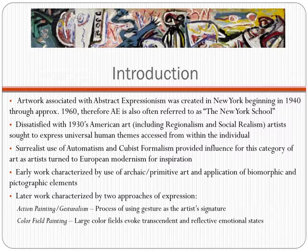Gesturalism, or action painting, a term created in 1952 by art critic Harold Rosenberg, emphasized the process of using gesture in individualistic ways, which acted as the artist's personal signature of his or her work. This is exemplified in paintings such as the Moon Woman from 1942 and Circumcision from 1946, both by Jackson Pollock, and also by William de Kooning's Woman One from 1950. Color field painting was the second approach, in which large fields of pure color evoked transcendent and reflective emotional states, as can be seen in Mark Rothko's Orange, Red, Yellow from 1961.